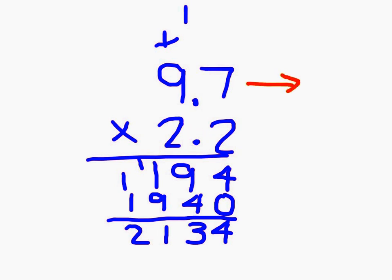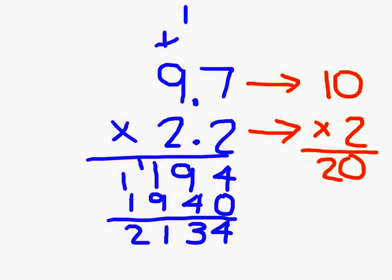Really, 9 and 7 tenths, when we estimate it, we could estimate that to 10 as the nearest whole number, and 2 and 2 tenths we estimate as 2, so 10 times 2 is 20. To make this close to 20, we would place the decimal point right here as 21.34. It makes us understand that our answer seems to be reasonable.